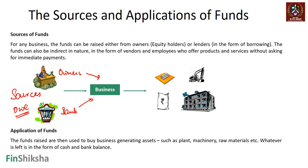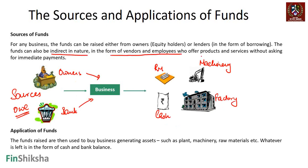It's important to understand that the owner is separate from the business. The owner puts in money, which gets applied as raw material, machinery, factory buildings, and remaining cash. Some funds can also be indirect - from vendors and employees who offer products and services without taking immediate payment. For example, if my tire supplier gives me tires without taking money, that is effectively a source of funds I must return later.